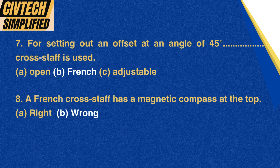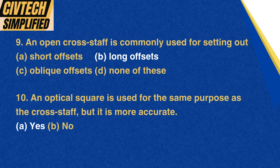Question 7: For setting out an offset at an angle of 45 degrees, which cross staff is used? A. Open, B. French, C. Adjustable. Correct option: B. French. Question 8: A French cross staff has a magnetic compass at the top. A. Right, B. Wrong. Correct option: B. Wrong. Question 9: An open cross staff is commonly used for setting out: A. Short offsets, B. Long offsets, C. Oblique offsets, D. None of these. Correct option: B. Long offsets.